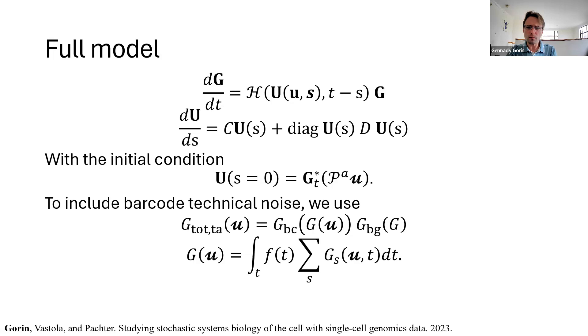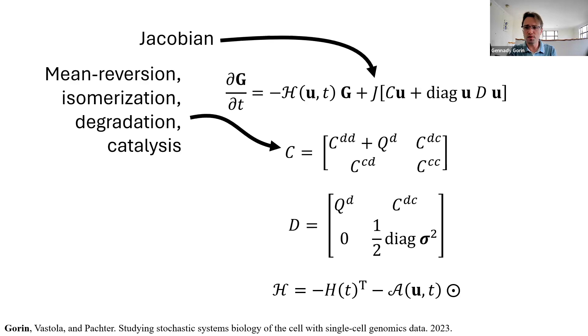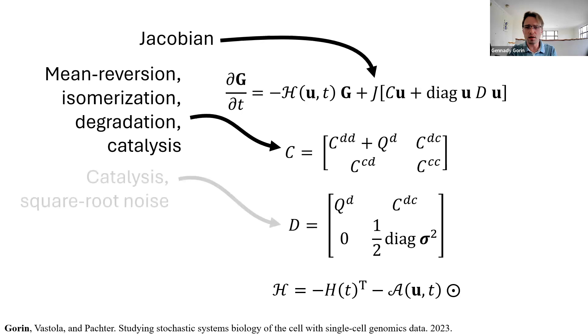Now, this isn't just from nowhere. This is actually the result and a numerically tractable version of this partial differential equation which is in turn isomorphic to the master equations. It's just its Laplace or Z-transform. So we can look at it term by term. J is a Jacobian, C is the matrix that includes linear terms like what molecules do once they've been produced like degradation and splicing. D is a matrix with non-linear terms like catalysis and operator H includes state switching and RNA production, everything that happens at the gene locus.